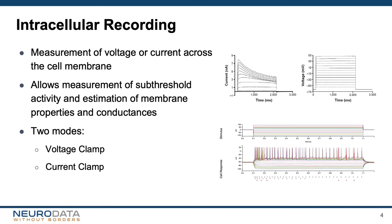There are two main types of intracellular experiments. In voltage clamp experiments, the stimulus that is applied to the cell is a command voltage that sets the membrane potential of the cell, and the response that is recorded is the resulting current that flows through the intracellular electrode. In current clamp recordings, the stimulus is a current waveform that is injected through the intracellular electrode, and the resulting membrane voltage is what is recorded.